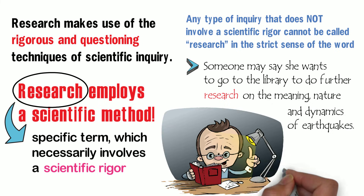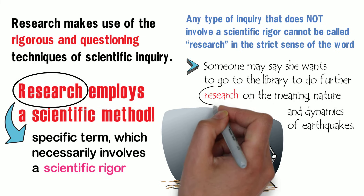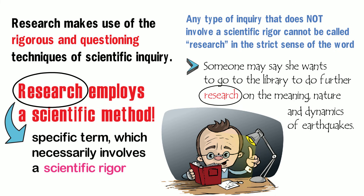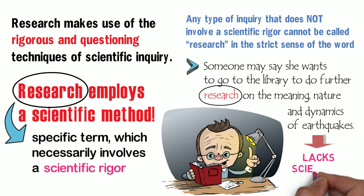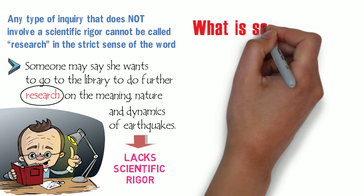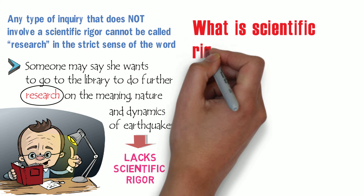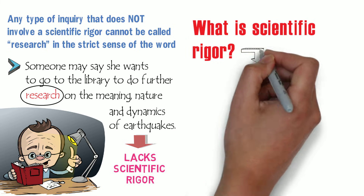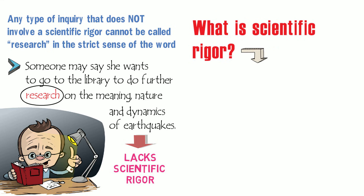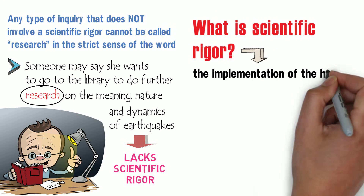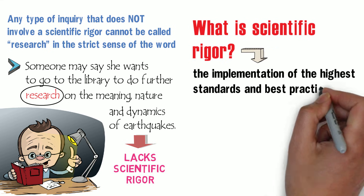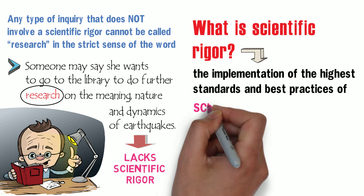As we can see, the term research is wrongly used here because in the first place, it lacks the scientific rigor. Now, what is scientific rigor? By scientific rigor, we mean the implementation of the highest standards and best practices of science.